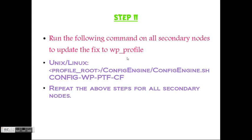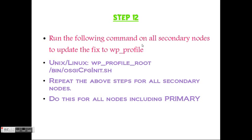Run the following command to update the fix to your WP profile. Go to your profile root config engine and run configengine.sh with the config WPTFCM task. Repeat this for all of your secondary nodes. Then, to clear the cache for all servers, go to your profile root build folder and run osgi config init.sh. Repeat this for all of your secondary nodes and your primary node.